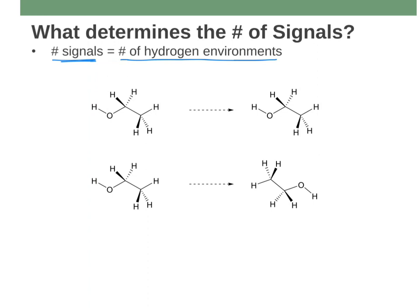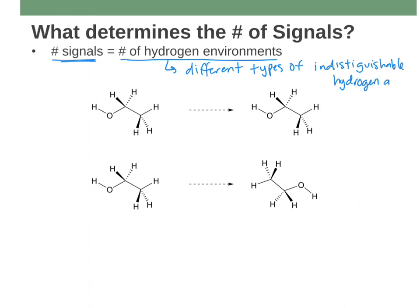By 'hydrogen environments,' we mean different types of indistinguishable protons — since we're talking about proton NMR. If this were a different nucleus like carbon, we'd be talking about indistinguishable carbons. This means I cannot tell the difference. It's not large categories like CH3s versus CHs; we're talking about whether this CH3 is different than that CH3. Can you verbally describe to somebody which hydrogen group you're talking about?